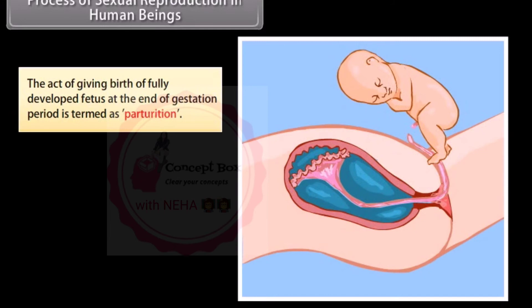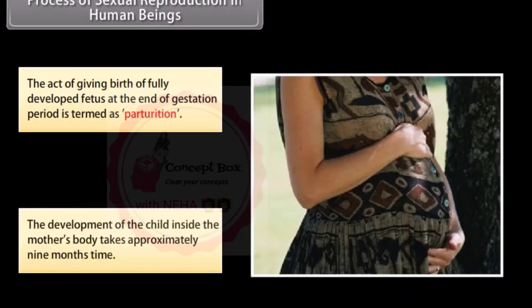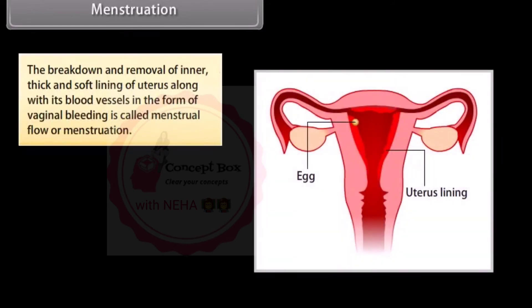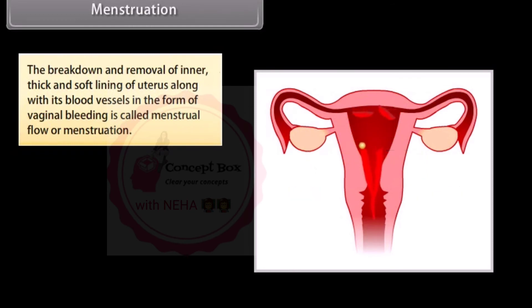The development of the child inside the mother's body takes approximately nine months. Menstruation is the breakdown and removal of the inner thick and soft lining of the uterus along with its blood vessels, in the form of vaginal bleeding, called menstrual flow or menstruation.